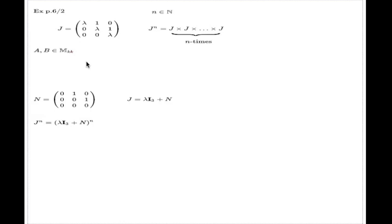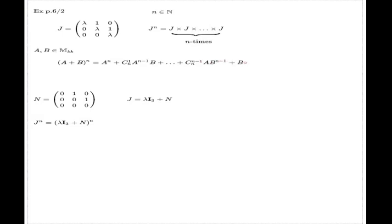So if I have two square matrices of size k, and I write the binomial expansion, then (A + B) to the power n gives the standard binomial expansion: nth power of the first term, binomial coefficients, and so on through to the last term. Now the question is: do we really have something like this for matrices? The answer is no — in general it is not so. If you try to prove this relation for matrices the way you do for numbers, you will hit many obstacles, and all of those obstacles come from one single problem: matrix multiplication is not commutative, something we discovered last time.